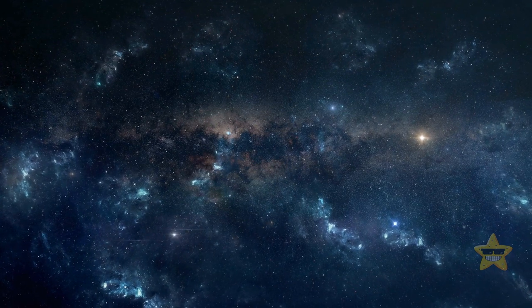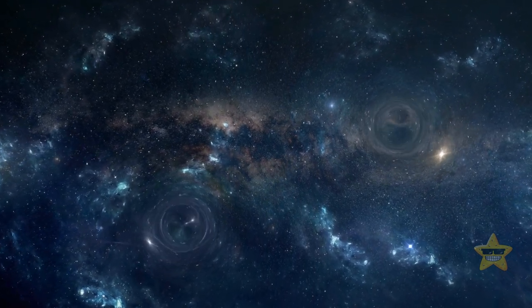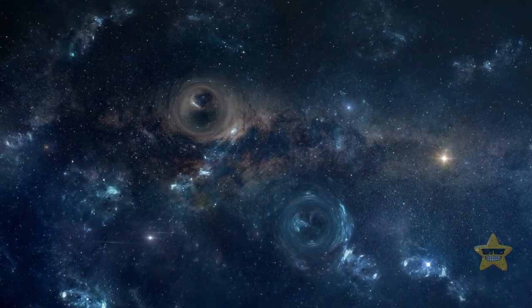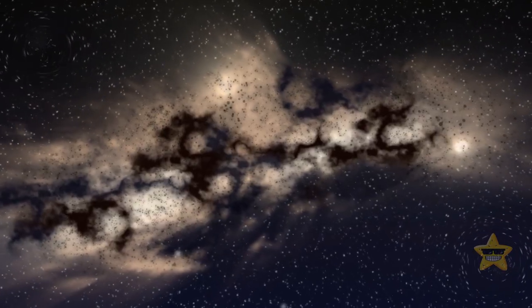When light from galaxies that are really far away from us travels through space, there can be things in its path that can bend it with their gravity. It's like having mirrors in a funhouse. This way, scientists can figure out where the mass is located in the universe.